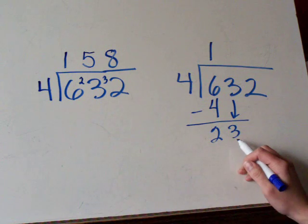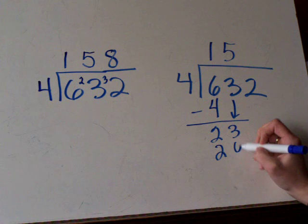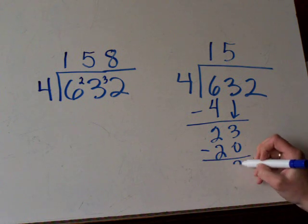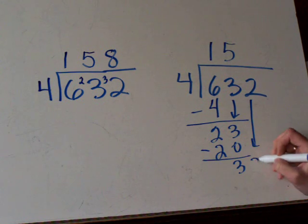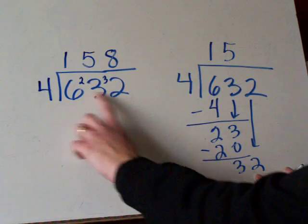4 goes into 23. 4 goes into 23 five times. 5 times 4 is 20. And you subtract. And you bring the next digit down. And here we have 4 goes into 32. Over here we have the same thing. 4 goes into 32.